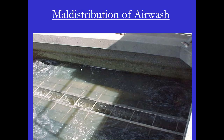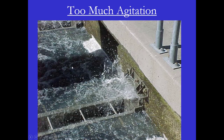If the filter has an air wash system, you also want to carefully watch the air wash. Here you can see there's a lot of agitation here and here, but almost nothing in this area. You would see all this water shooting up during the air wash. This is a problem because in addition to water shooting up, you're also shooting up media, which goes to the trough and is lost, causing a problem with backwash time.